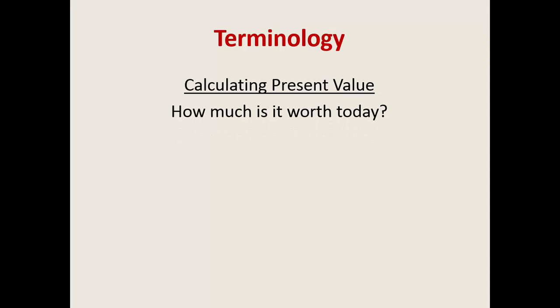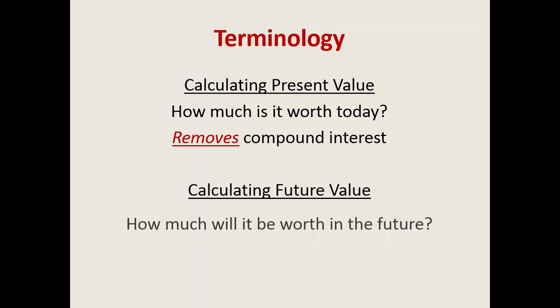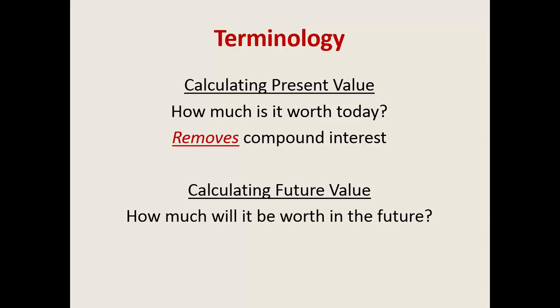If you need to calculate present value, you want to know what it's worth today. If you want to calculate future value, what's it worth in the future? That's with the removal or the addition of compound interest. So when you add to get to a future value, you're compounding. When you're removing interest, it's actually called discounting. You may hear the term interest rate or discount rate — it's the same thing.